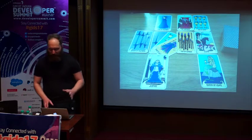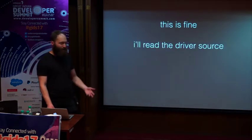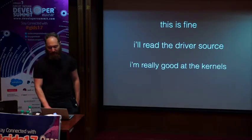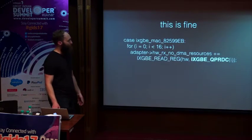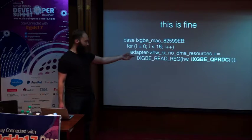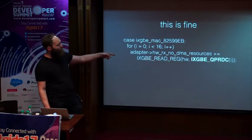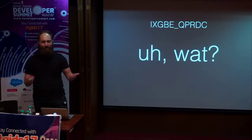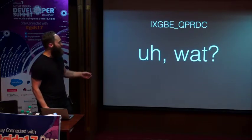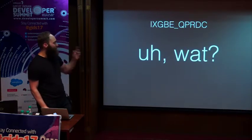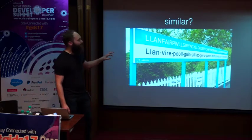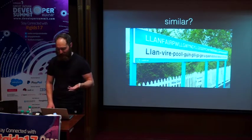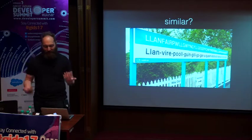Maybe at this point you're thinking: I'll just read the driver source code, I'll figure out what all this means, I'm really good at Linux kernels. So let's do that. We look in the kernel and find this weird statistic called 'ixgbeqprdc.' What is that? You want to know what it means because you're collecting and graphing it. This statistic reminds me of cities in some Nordic countries that have names a hundred letters long — it's just a bunch of letters together that don't mean anything on the surface.